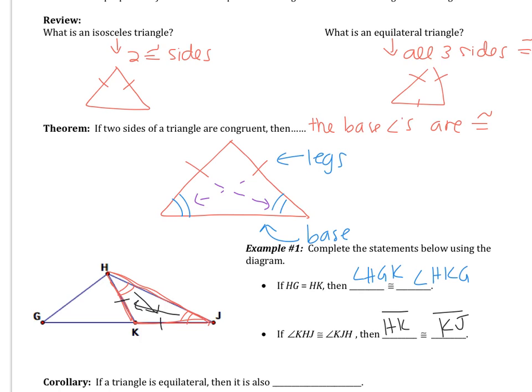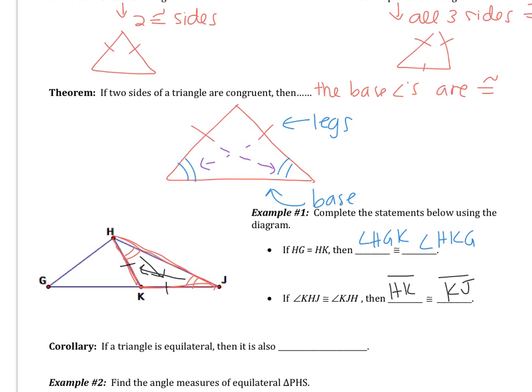So this is the idea with isosceles triangles. That leads us to equilateral triangles — something we've talked about in class before. If a triangle is equilateral, it's also equiangular. We're going to be using these ideas of isosceles triangles with congruent angles and legs, and equilateral/equiangular triangles, to find missing side and angle measures.